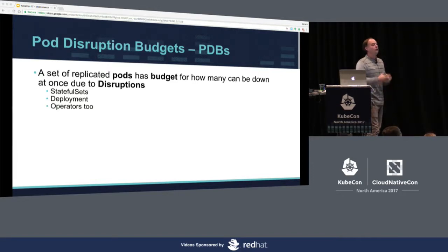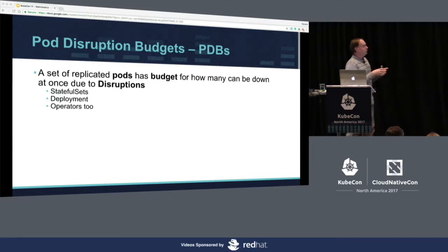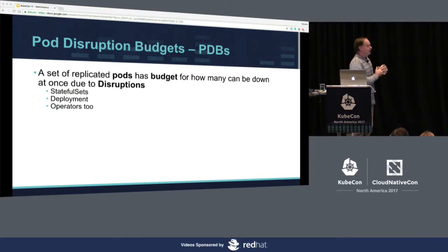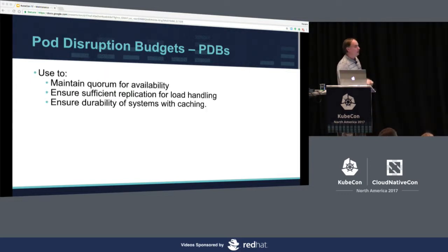If you're running stateful services on Kubernetes and want to run node upgrades across them — some people I talked to today are running etcd on Kubernetes with all their servers depending on it — you really want to make sure you don't lose quorum for etcd while updating nodes. For that, I encourage you to create a Pod Disruption Budget object for your etcd cluster. PDB — because whoever thought of 'pod disruption budgets' didn't have RSI, I guess. It's a set of replicated pods selected by a label selector, with a budget for how many can be down at once due to disruptions. You can use it with stateful sets, deployments, an operator like etcd operator — anything you can select as a group with labels.